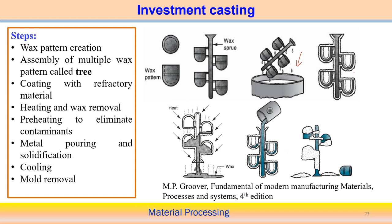A very thin coating forms over the wax pattern. It is then heated, which accomplishes two tasks: the coating becomes harder, and since wax has a very low melting point, the wax melts away creating a cavity. Once the cavity is created, the mold is placed in a flask, liquid metal is poured and gradually fills the cavity. After solidification, individual components can be separated from the tree-like structure.